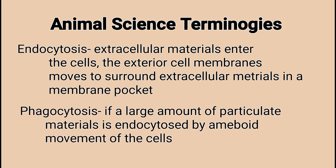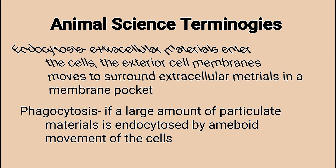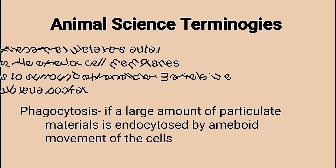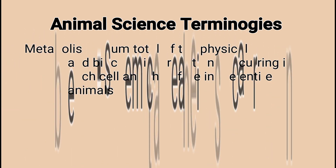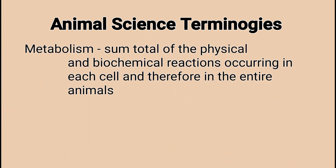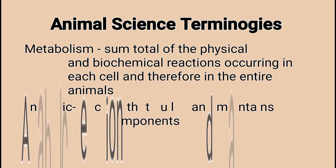Phagocytosis is when a large amount of particulate materials is endocytosed by amoeboid movement of the cells. Metabolism: the sum total of the physical and biochemical reactions occurring in each cell, and therefore in the entire animal.